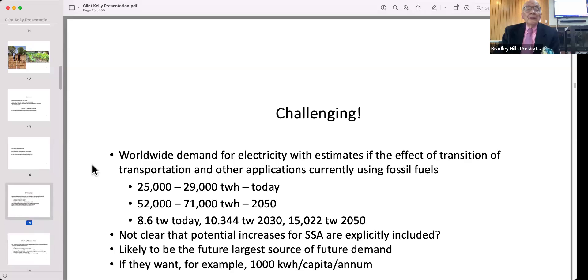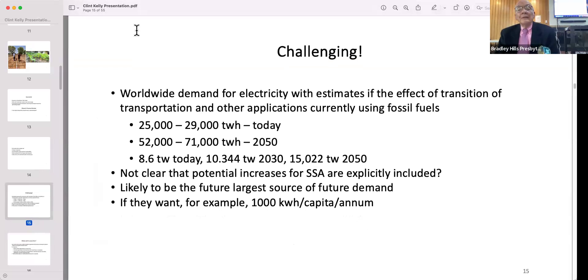Worldwide demand for electricity today is on the order of 25 to 29,000 terawatt hours—a terawatt is a million billion, so it's 10 to the 12th. The guess is, particularly with the net zero 2050 policies in place, that this could go as high as 71,000 terawatt hours by 2050. It's not clear that increased aspirations on the part of people in sub-Saharan Africa for more electricity is included in this, and it's clear that data center surging demands are not in this.